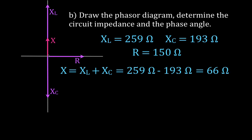The net reactance vector points in the positive direction because the inductive reactance is greater than the capacitive reactance. If the capacitive reactance had been greater, it would point negative. Don't be confused if your exam problem gives the opposite direction — it simply depends on which reactance dominates. In this case the circuit behaves more inductively.